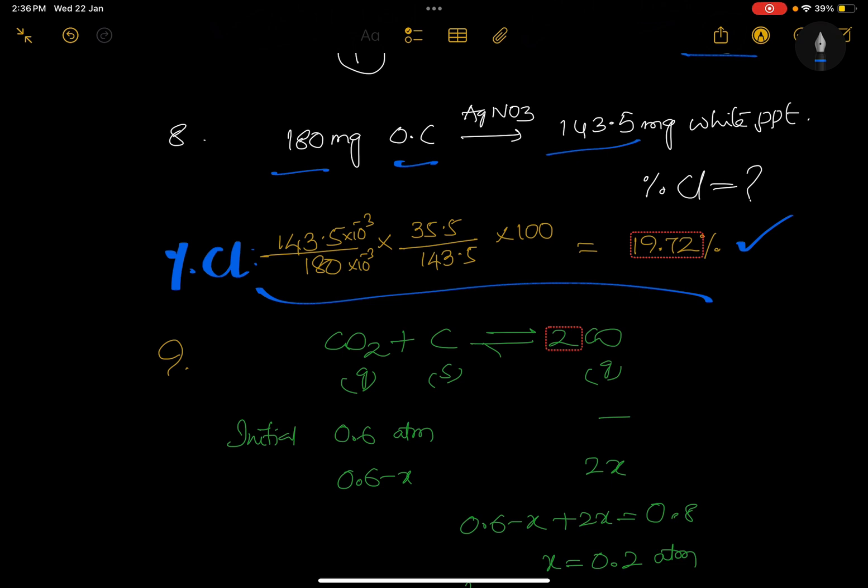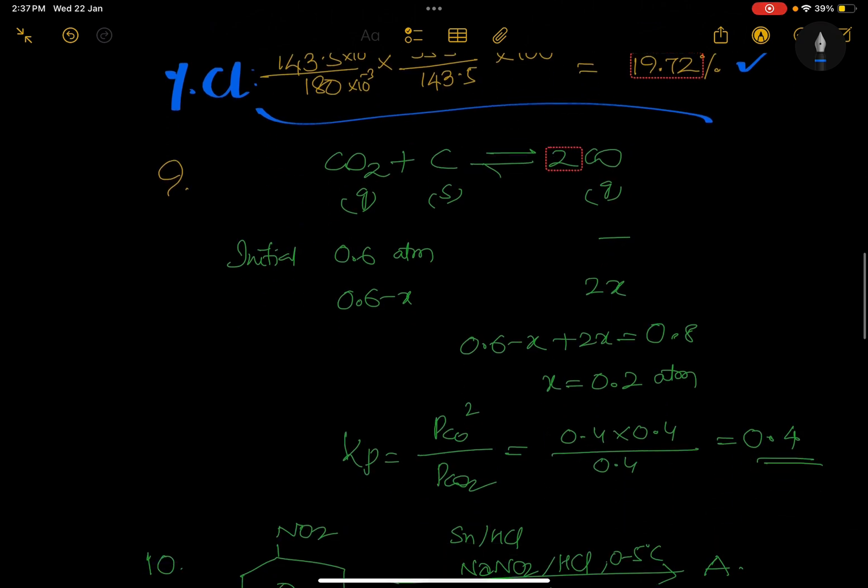So now don't look at the question, don't look at the values, just remember this formula. Based questions are coming, we need to check the formula, that's all. Here is a question: given initial pressure is given 0.6 atm, equilibrium pressure is given 0.8 atm, and is asking Kp. CO2 + C gives CO - this is solid. Initial pressure 0.6, so it is not there, 0.6 - x, 2x. So total pressure is 0.8 means x equals 0.2.